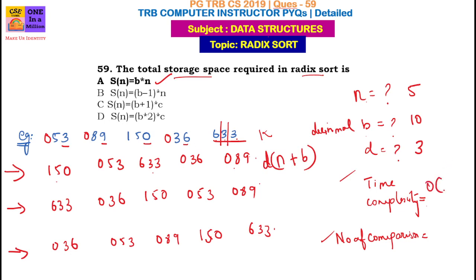Time complexity is equal to order of d × (n + b). There are 3 levels of comparisons. For the number of comparisons, we calculate n × b × d, which equals 5 × 10 × 3 = 150.